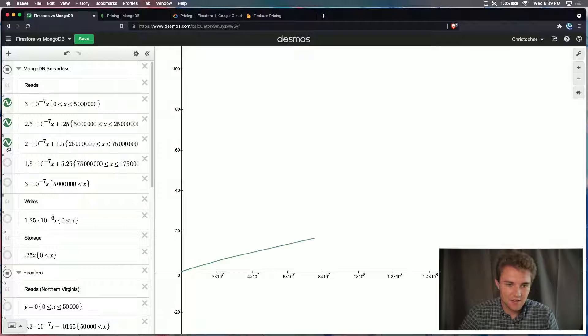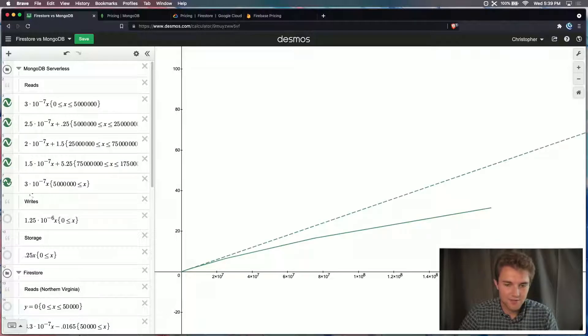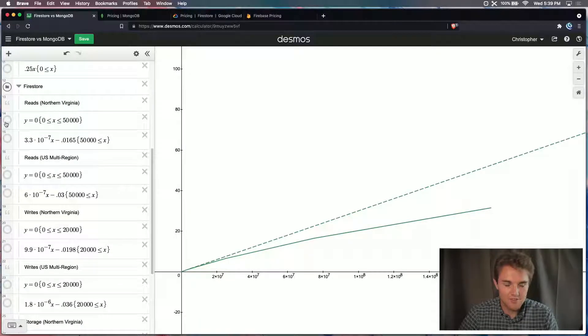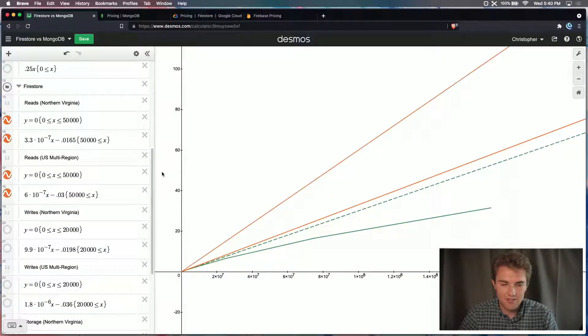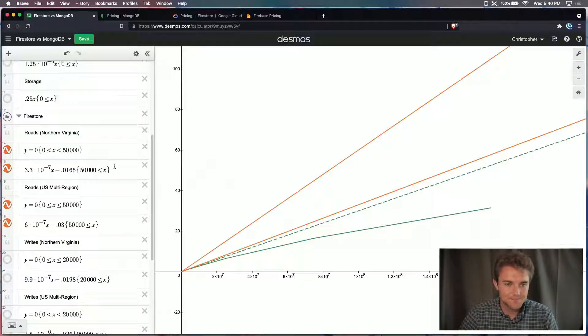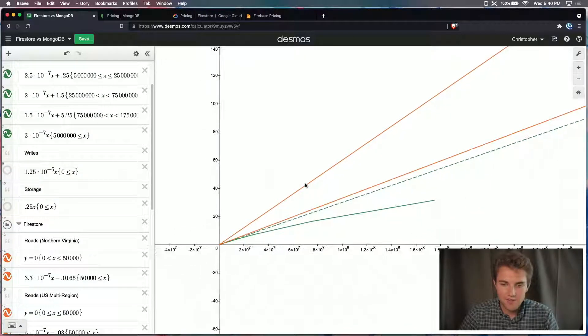First, we're going to look at reads. This is how pricing scales for reads with MongoDB versus... Now, one thing you should know is that for Firebase or for Cloud Firestore rather, it depends which region you're storing your data in. So I'm including U.S. multi-region and North Virginia to kind of get a comparison between the two. Multi-region will always be more expensive than one location, or at least more expensive than Northern Virginia.